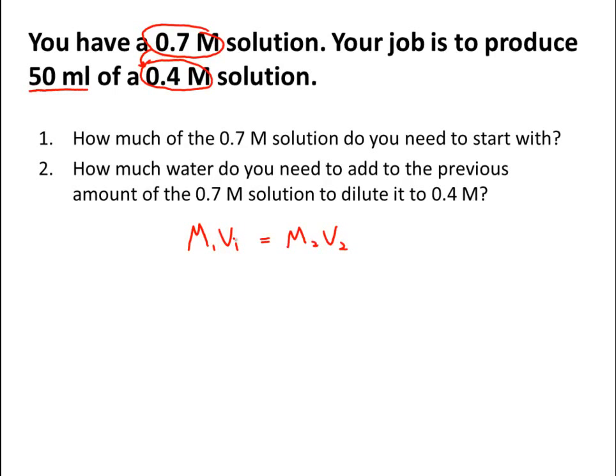And then how much water will we need to add to that to get to this new molarity with that new volume? So the problem is telling us that we want to dilute it down to a 0.4 molar solution. That's 0.4 moles per liter. And specifically we want to produce a 50 milliliter volume.